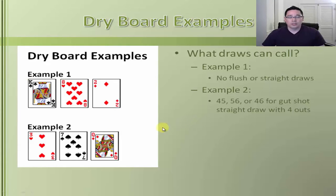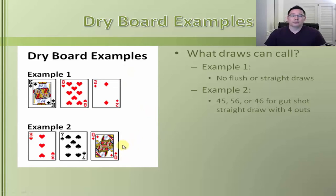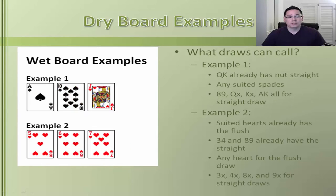There's no flush draw and no other straight draw that can hit on the turn, so both of these are very dry boards. When we have a dry board, it plays a huge role in determining whether we should continuation bet and how much we should bet — which we'll discuss further in this lecture and the next.